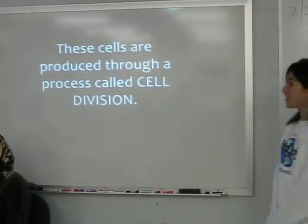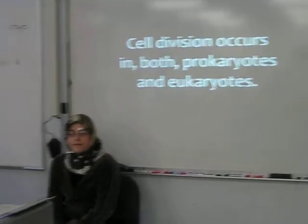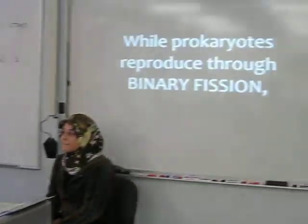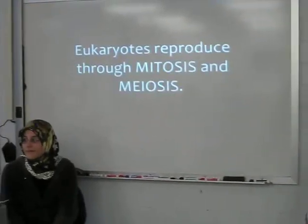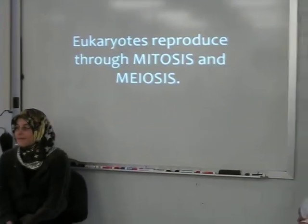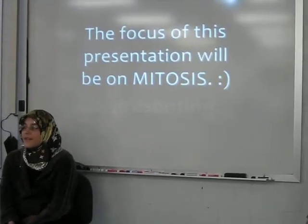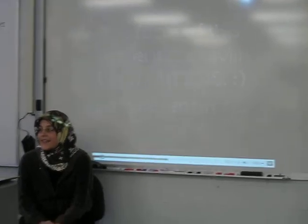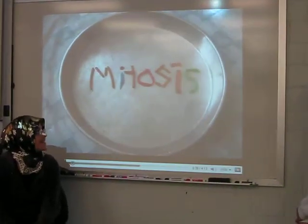Cells are produced through a process called cell division. Cell division occurs in both prokaryotes and eukaryotes. While prokaryotes reproduce through binary fission, eukaryotes reproduce through mitosis and meiosis. The focus of this presentation will be on mitosis — M-I-T-O-S-I-S, mitosis.